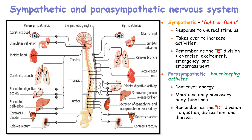The sympathetic nervous system is generally a system that responds to unusual stimuli — for example, fight or flight situations — and it takes over to increase activities. To remember the effects of the sympathetic nervous system, you can use the mnemonic the 'E-division': exercise, excitement, emergency, and embarrassment.